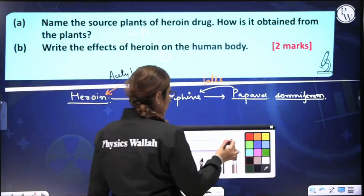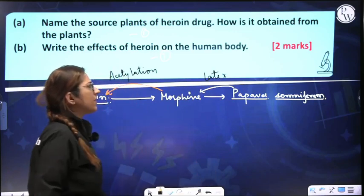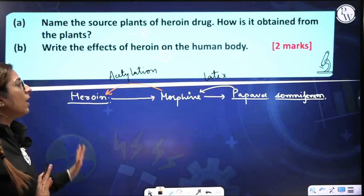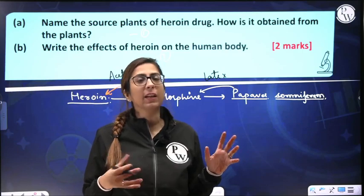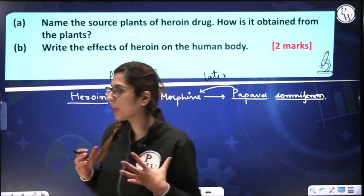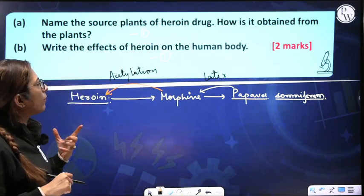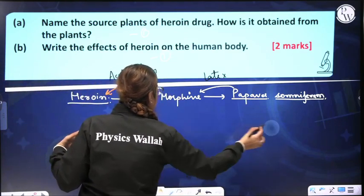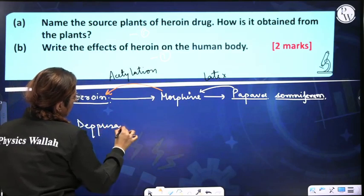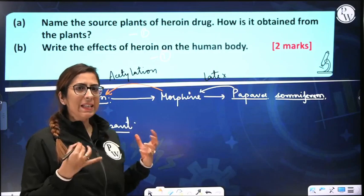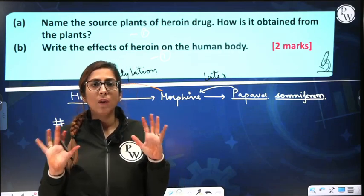Whatever drugs we have, you should know from where we obtain them, their common name, and their scientific name — please keep them in your mind. The effect of heroin on the human body: it is a depressant. That means it reduces body activity; it doesn't increase it. Like alcohol — alcohol is also a depressant.